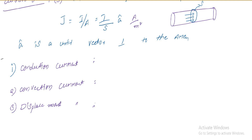The conduction current is the current which is propagated through conductors, and here Ohm's law is obeyed.